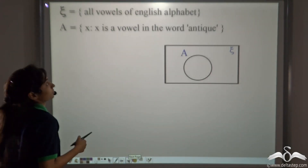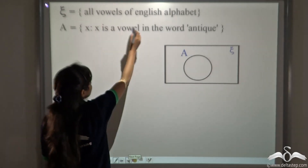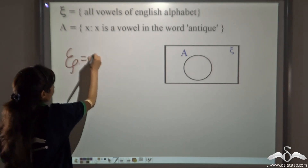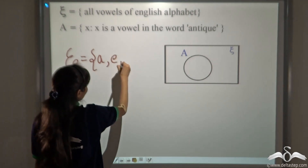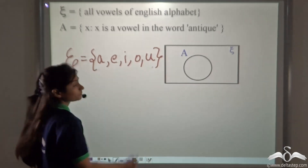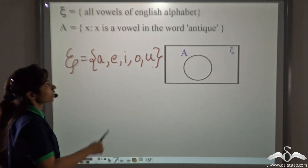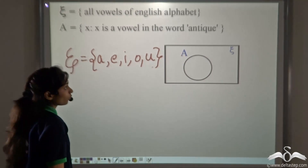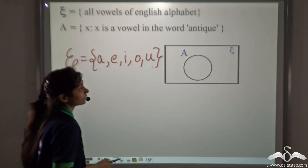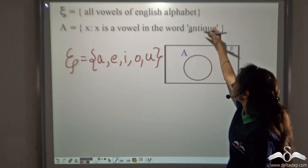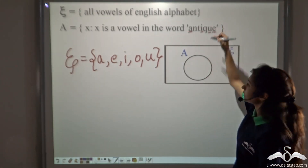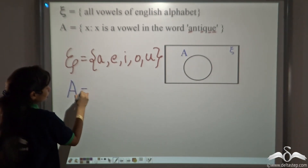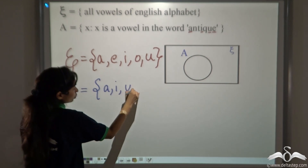Now let's take this example. The universal set is all vowels of the English alphabet — that is A, E, I, O, and U. Set A is defined as the set of vowels in the word 'antique'. Which are the vowels in the word antique? They are A, I, U, and E — four vowels in this word.